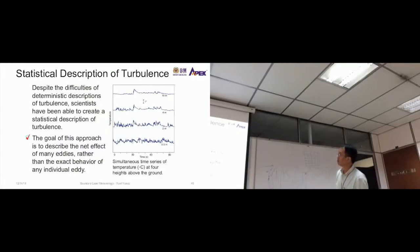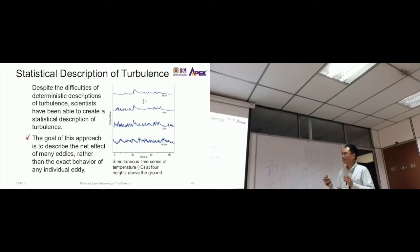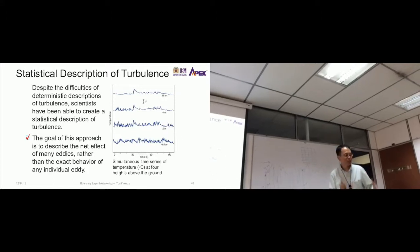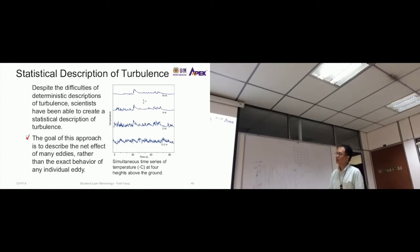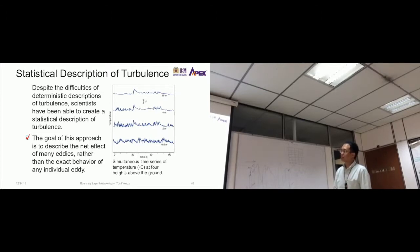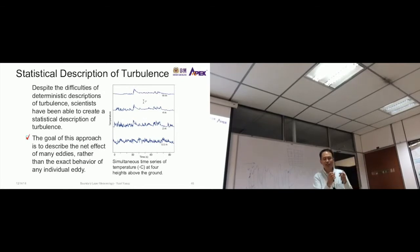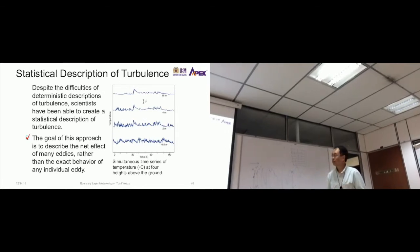Despite the difficulties of deterministic descriptions of turbulence — meaning we cannot accurately and deterministically be 100% sure of our description — scientists have been able to create a statistical description of turbulence. Through Taylor's hypothesis, the goal is to describe the net effect of many eddies rather than the exact behavior of individual eddies, because it's too chaotic or random for us to describe a single one.